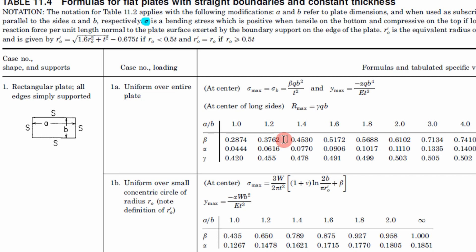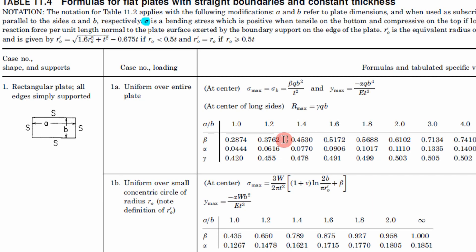So I'm going to go ahead and step into the Excel spreadsheet to show you how this is set up and how this is coded up. So this is how the spreadsheet is set up for a simply supported rectangular plate with a pressure load on it.